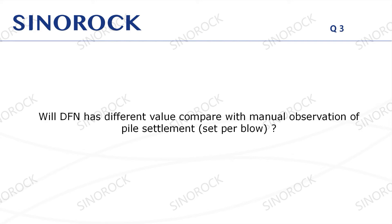Question 3: Will DFN have a different value compared with manual observation of pile settlement set per blow? The final DFN obtained by the equipment is the result of the integration of the original acceleration signal, and it is only a reference due to the eccentricity of the hammer or the difference in the pile concrete at the sensor installation position. If manual measurement is performed during the test, the manually measured DFN shall prevail.